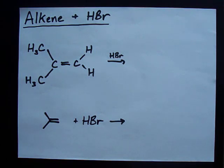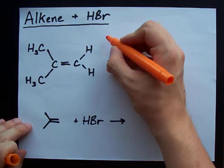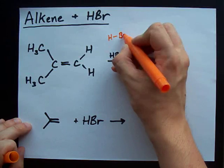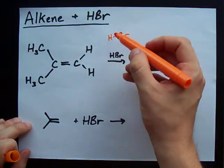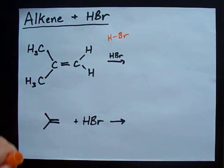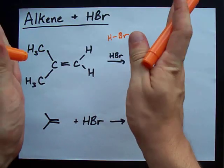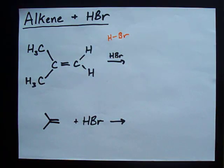Well, what happens is this HBr, which comes as an H connected to a Br, adds itself across the double bond. The double bond breaks open, you add H to one side and Br to the other side.